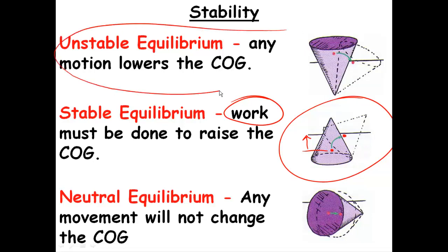As opposed to unstable equilibrium, any type of motion is going to cause this thing to topple over. Neutral, yeah, it's going to be pretty stable, but any movement is not going to change it. This thing is just going to roll. That center of gravity is going to stay right where it's at.